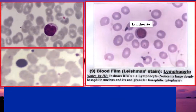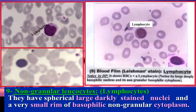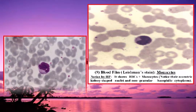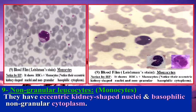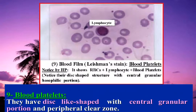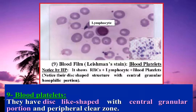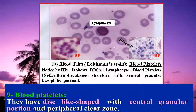Examples of non-granular leucocytes: lymphocytes have spherical large darkly stained nuclei and a very small rim of eosinophilic non-granular cytoplasm. Monocytes are another example of non-granular leucocytes, less numerous than lymphocytes; they have eccentric kidney-shaped nuclei and basophilic non-granular cytoplasm. Blood platelets have a disc-like shape with a central granular zone and a peripheral clear zone.